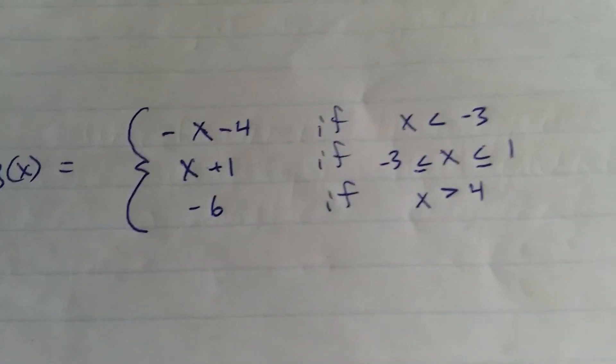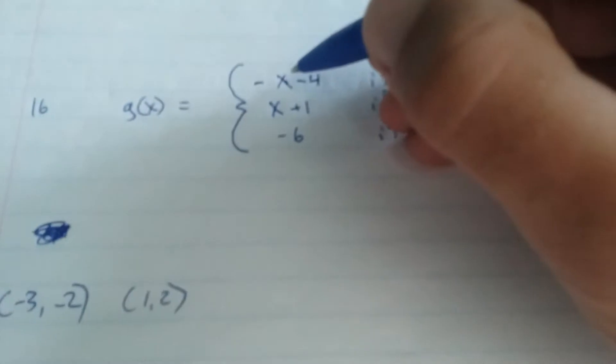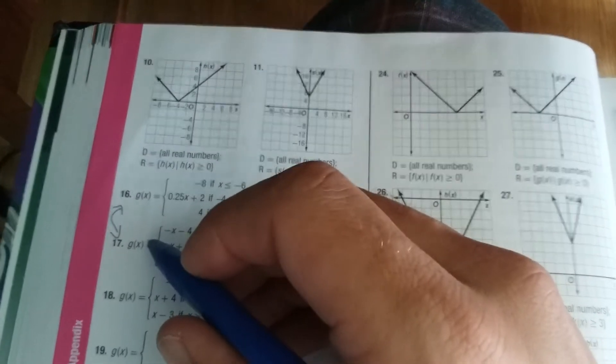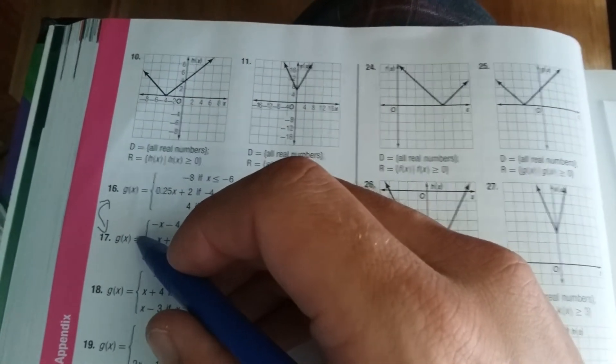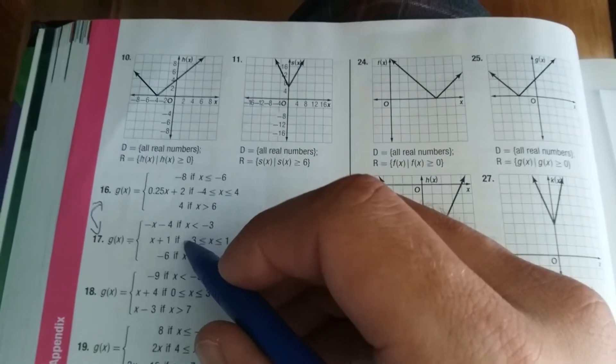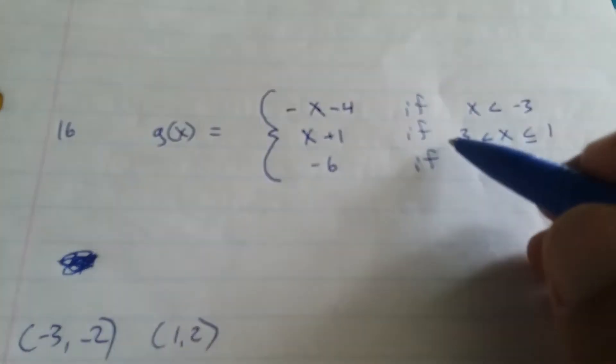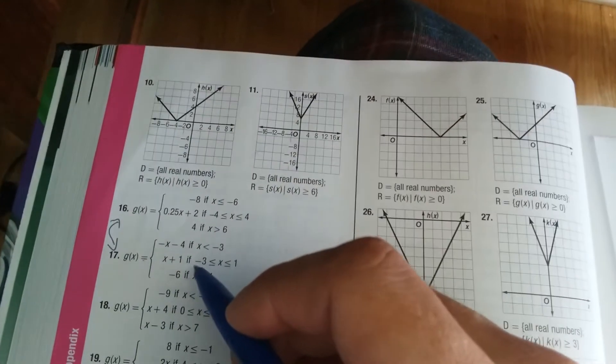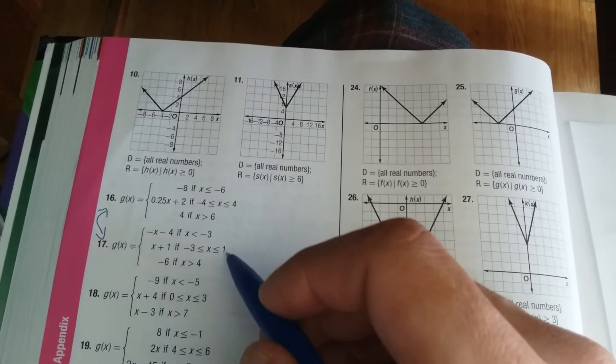So there is 16, and let's see if that matches up. So this is 16 out of the book. And if you were to compare it, notice your first line here, negative x minus 4. Negative x minus 4 is actually in the answer key to 17. And then it's x plus 1 if x is between negative 3 and 1. x plus 1 if x is between negative 3 and 1. And then negative 6 if x is greater than 4. Negative 6 if x is greater than 4.